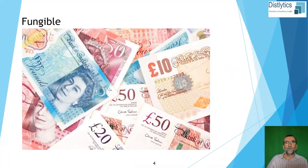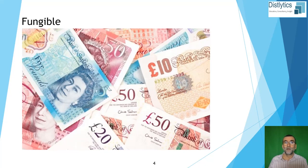Let's begin by explaining what fungibility is, what non-fungible means, and how a token is used. Fungibility is the ability of an object, item or asset to be exchanged or substituted for something else that has similar characteristics. For example, a £5 note can be exchanged for another £5 note — the only difference is the serial number. The value remains the same.